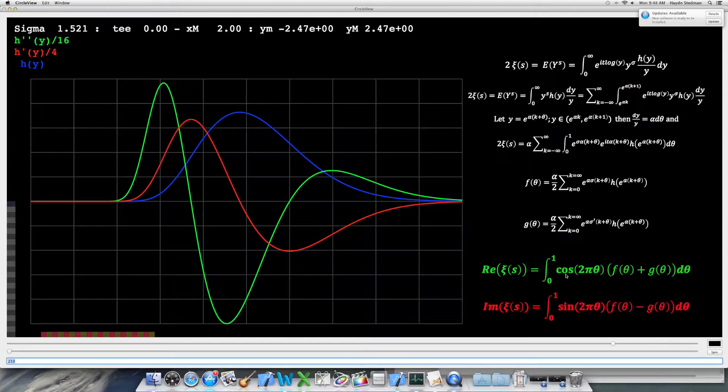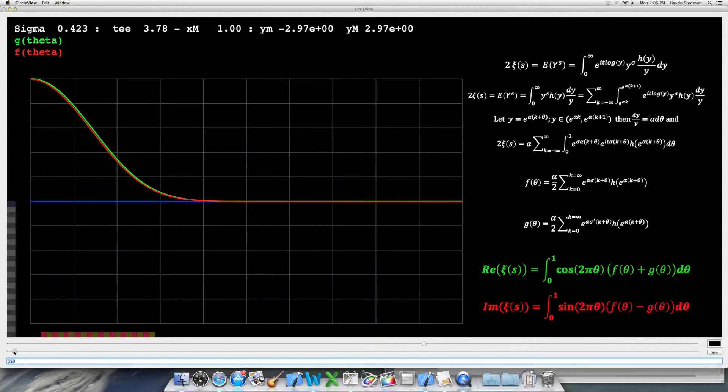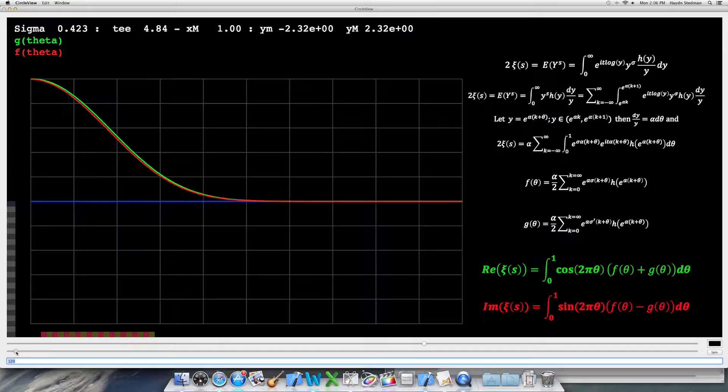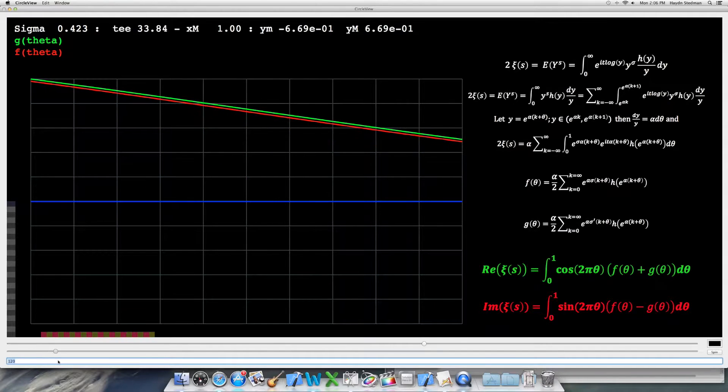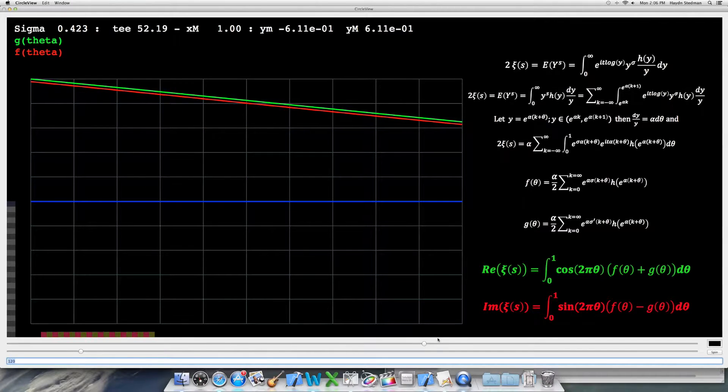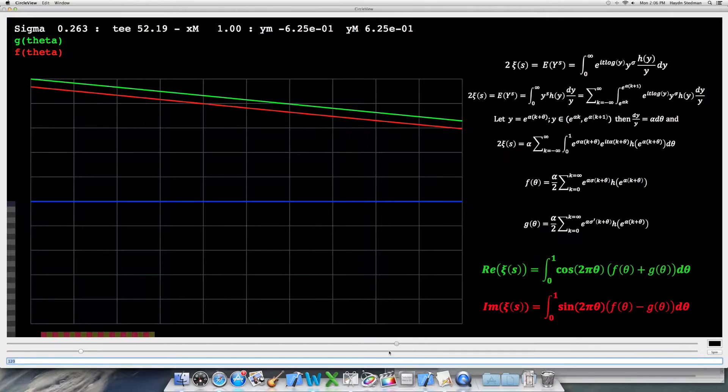The real part is equal to the integral against cos, the imaginary part equal to an integral against sine. F and G start out looking like the distribution, tend to a constant value as T increases. We see the effect of varying Sigma.